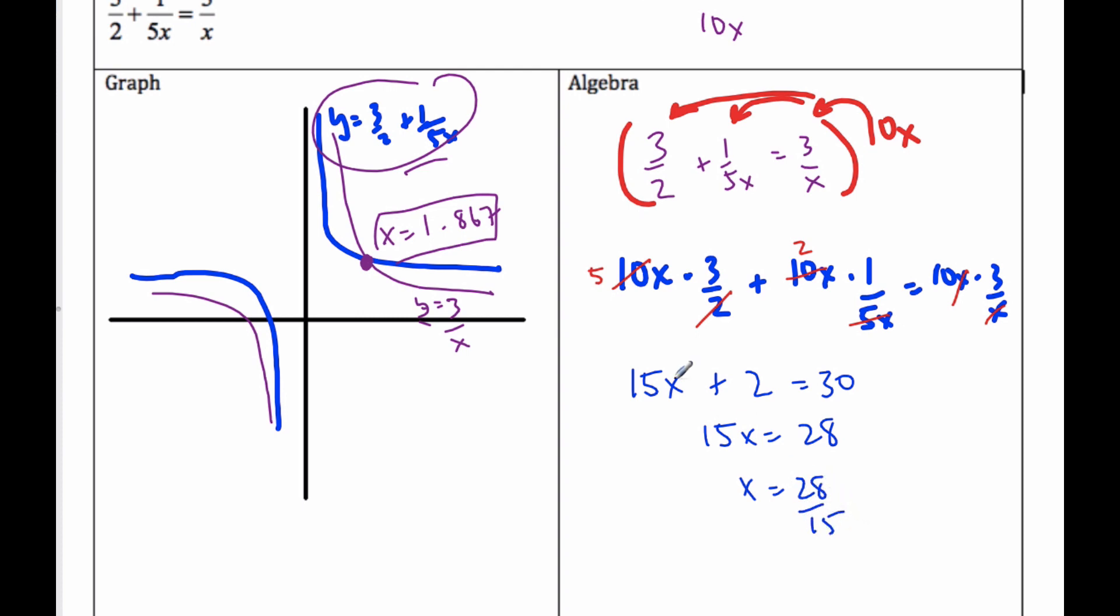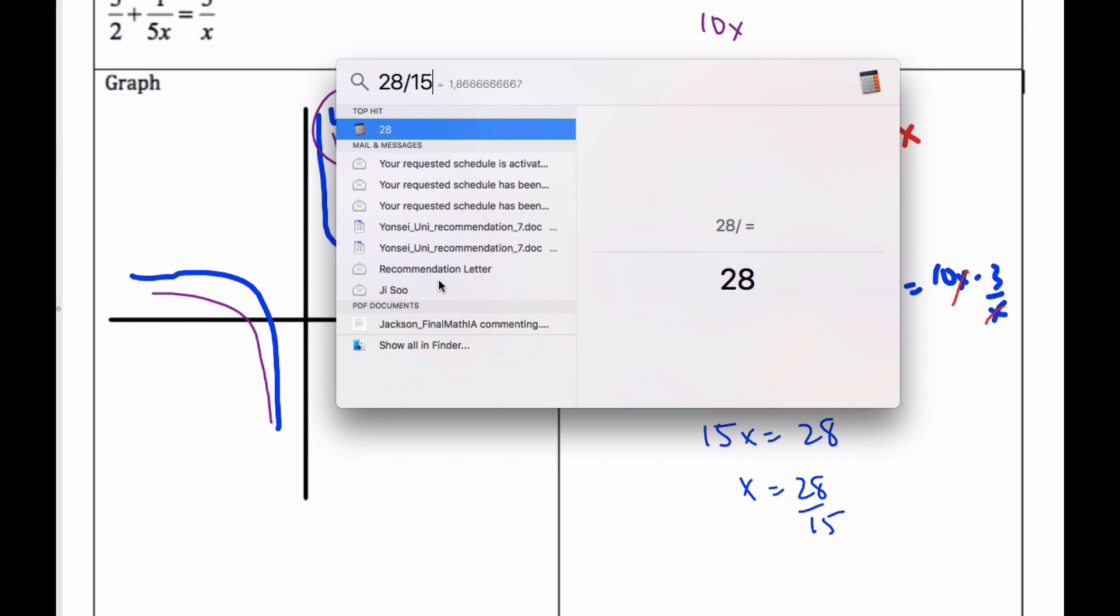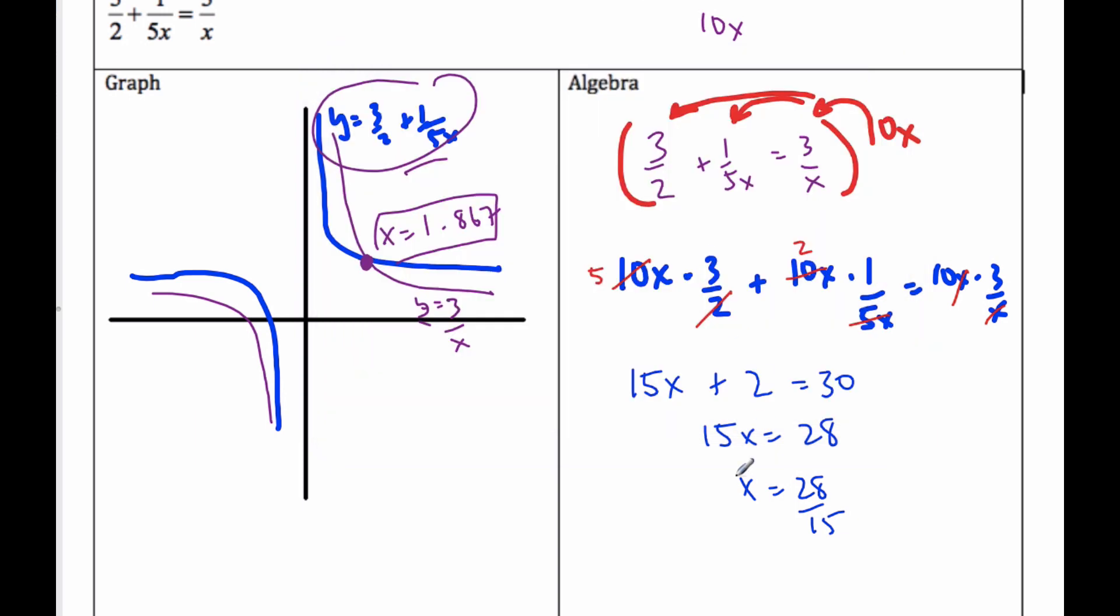Well, how do I know that this is the same answer? I could do a quick estimate. I know 2 times 15 is 30, which would be 30 over 15. And this is a little bit less, so it seems about right. If I do a quick calculation, 28 divided by 15 is indeed 1.8666. So this is indeed my solution.